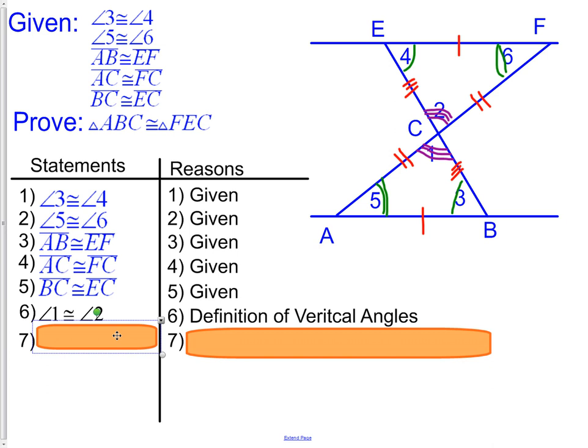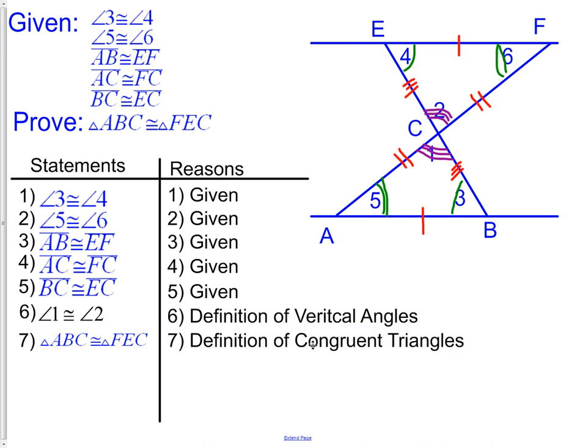So now we can say, because all angles and all sides are congruent between the two triangles, that triangle ABC is indeed congruent to triangle FEC. Our reason, similarly to our last proof, was the definition of congruent triangles.